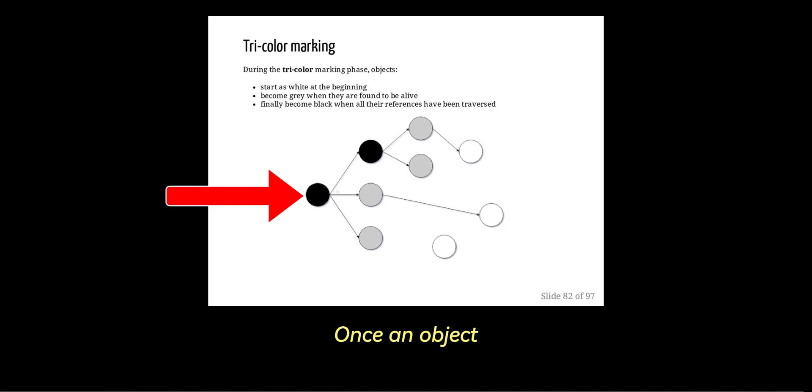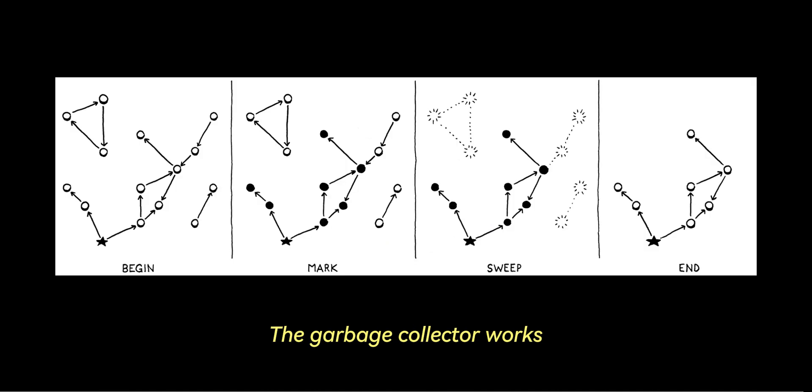Number three is black. Once an object and all its references are marked as reachable, the object is marked as black, confirming it's alive. The garbage collector works until no gray objects remain, at which point all remaining white objects are considered unreachable and eligible for collection. This color system helps prevent collecting objects that may still be needed by other reachable ones.